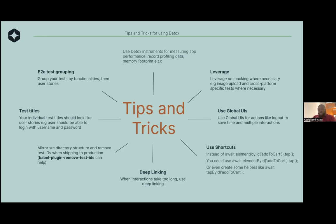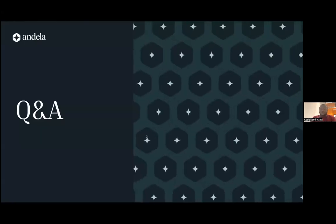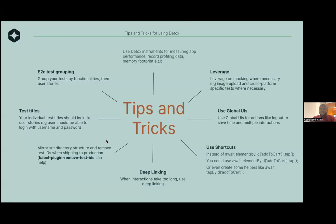When your app is going into production, you don't really need those test IDs and things that have to do with testing. There are a couple of plugins — if you are using Babel, you can use the Babel plugin remove-test-id, which will help you remove them. Also, we have Detox instruments, which help you measure the app performance, your CPU profiling data, your memory footprints, and ensure your app is performing as expected.